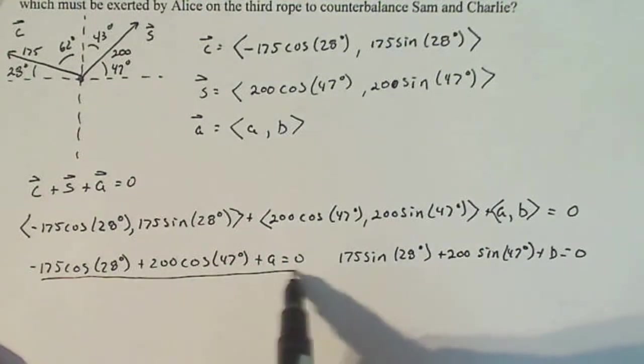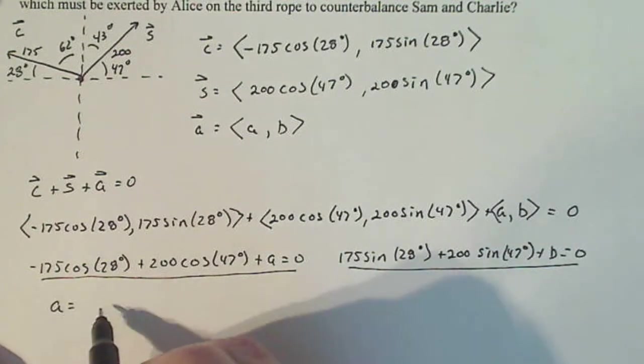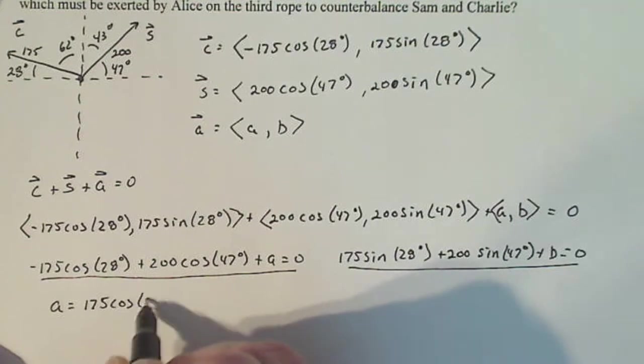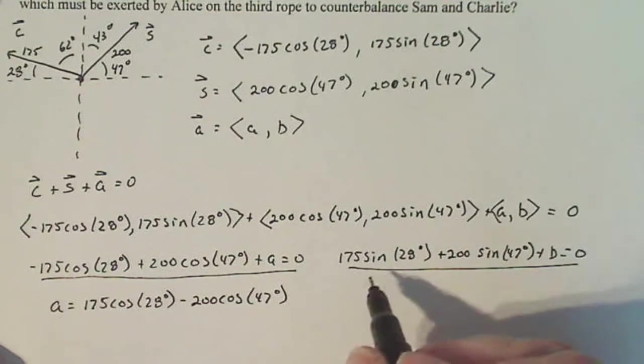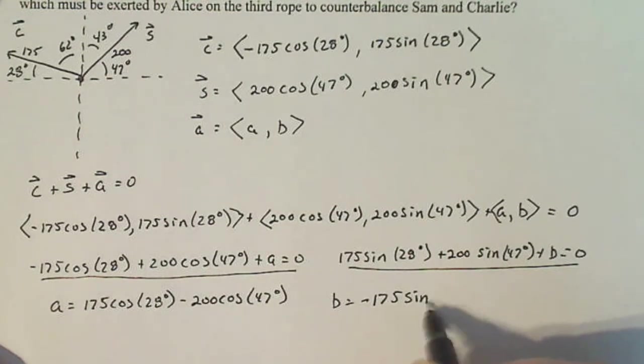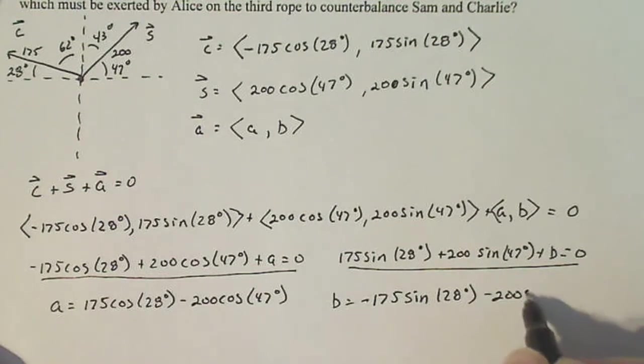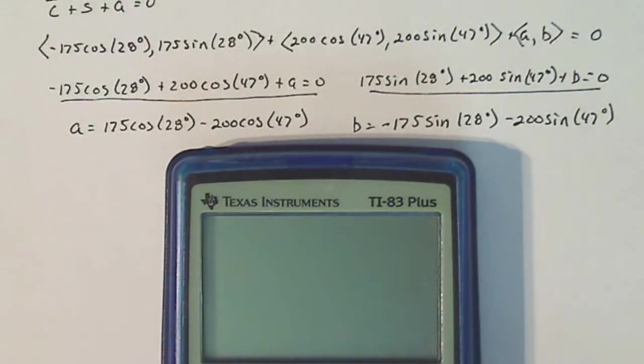So I've got minus 175 cosine of 28, that's the i component here, plus 200 cosine of 47 degrees, the i component here, plus a, should be zero. And the j components work the same: 175 sine of 28 degrees plus 200 sine of 47 degrees plus b equals zero. And now what I have is one equation here to solve for a and two equations here to solve for b. So I solve for a here, that means I'm going to subtract or move those to the other side. So the i component for Alice is 175 cosine of 28 degrees minus 200 cosine of 47 degrees. For the j component, that means b, so I'm going to subtract both of those from both sides: minus 175 sine of 28 degrees minus 200 sine of 47 degrees.